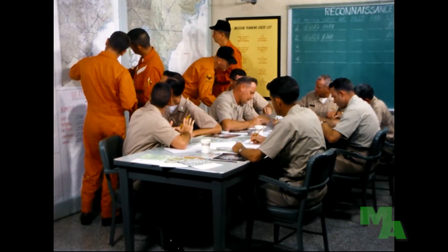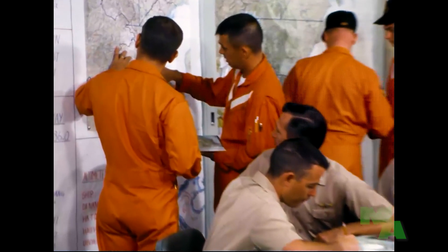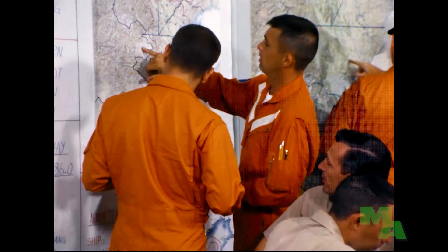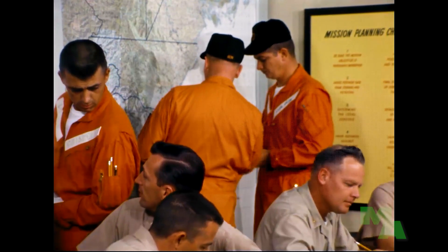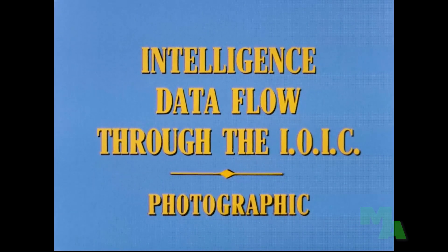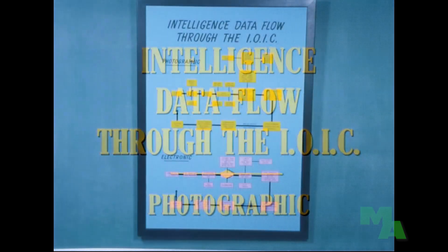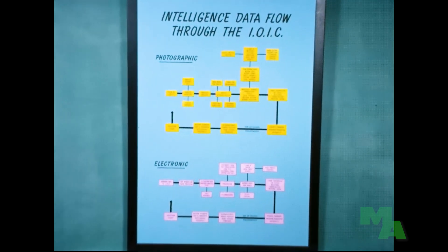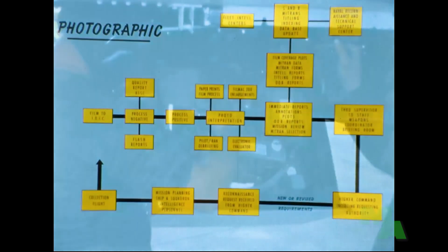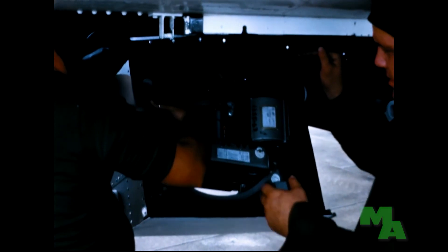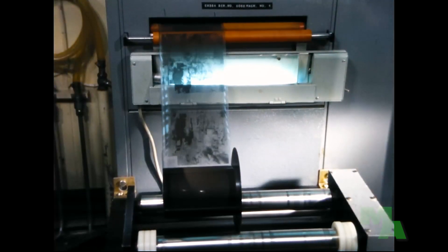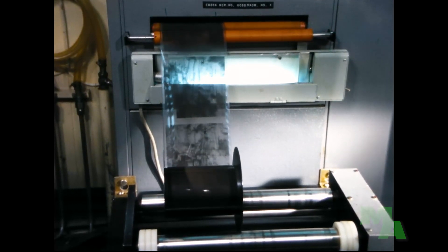This part of the film has discussed the planning of reconnaissance missions to obtain photographic and electronic intelligence data. The second part will discuss the flow of this data through the IOIC upon return of the aircraft from the mission. Photographic intelligence data brought back by reconnaissance missions must flow smoothly through the IOIC. Many operations are involved, but considered step by step, a flow chart is easily understood. When the flights return to the carrier, the film cassettes are removed from the airplane and hand carried to the IOIC — this is the starting point of our data flow diagram.